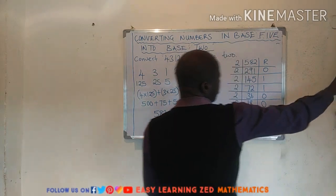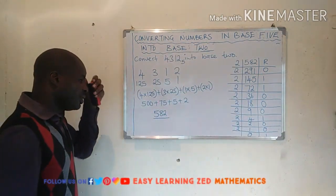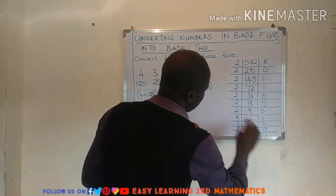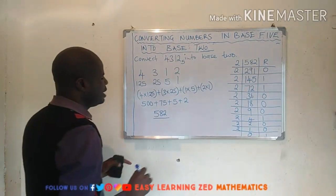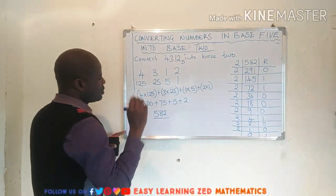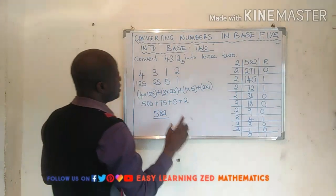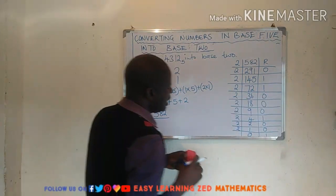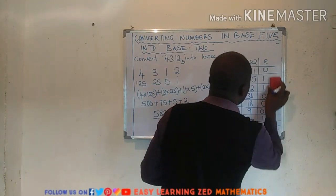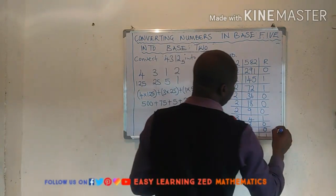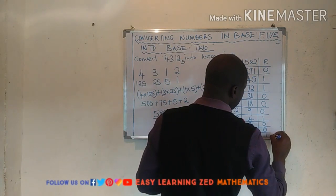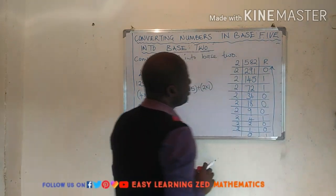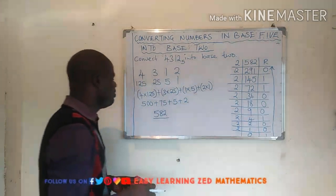So I have now converted this number into base 2. What you need to be mindful of is that you write the answers from the remainders starting from the last remainder up to the first remainder — we are going upwards.